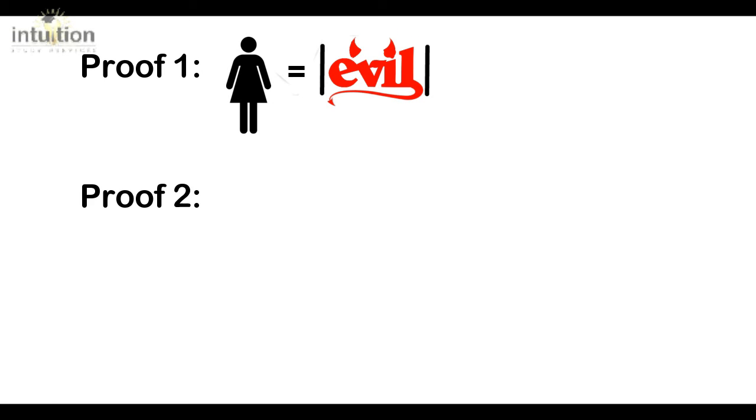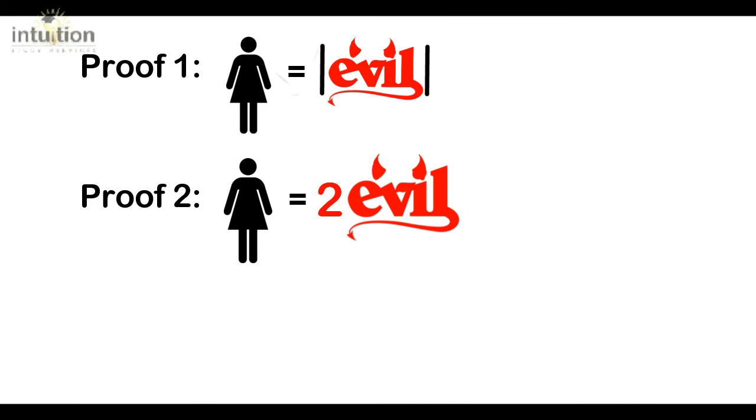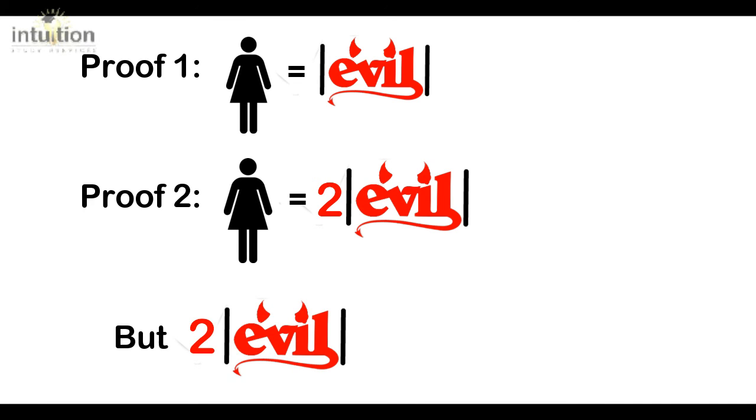So therefore, in proof one, when we said girls equal evil, we see now that girls equal absolute evil. And in proof two, we said that girls are two evil. But since two is a positive value as well, we see that two absolute evil is just the same as absolute two evil.